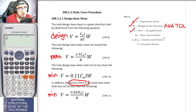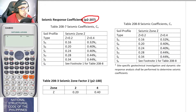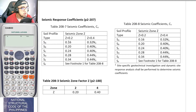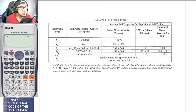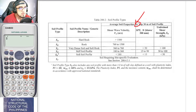The seismic coefficients CV and CA can be found on page 2-207 in tables 208-7 and 208-8. Their values depend on the soil profile type and the seismic zone. The soil profile type depends on what kind of soil the building rests upon — hard rock, rock, very dense soil, soft rock, etc. — and requires a geotechnical engineer's assessment.